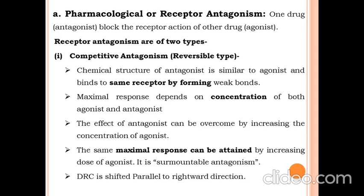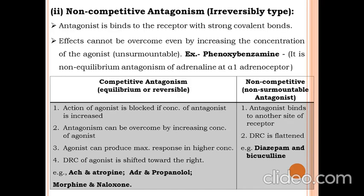The first type is competitive antagonism or reversible type. When the chemical structure of the antagonist is similar to the agonist and it binds to the same receptor by forming weak bonds, the effect of the antagonist can be overcome by increasing the concentration of the agonist. The same maximal response can be attained by increasing the dose of agonist — it is also known as surmountable antagonism. The dose-response curve (DRC) is shifted in a parallel rightward direction.